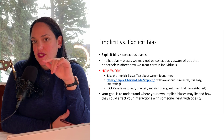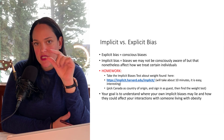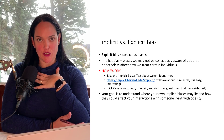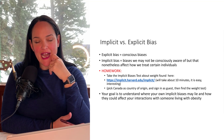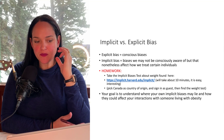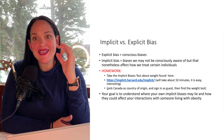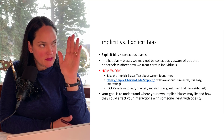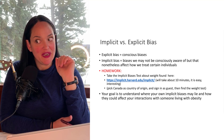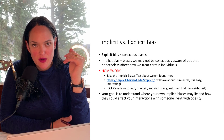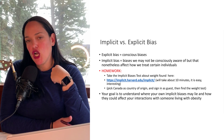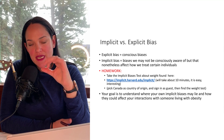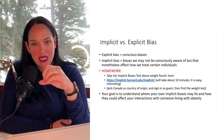Before moving on, I want to differentiate between implicit versus explicit weight bias — those negative attitudes and stereotypes we might have about individuals with obesity. Explicit bias is the type of bias we're aware of; we consciously know we don't like certain people because of the way they look. Implicit bias is harder to tease out — it's a bias we don't realize we have.